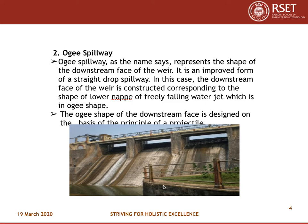Second is the ogee spillway. As the name suggests, it represents the shape of the downstream face of the weir. It is an improved form of a straight drop spillway. In this case, the downstream face of the weir is constructed corresponding to the shape of the lower nappe of a freely falling water jet, which is in ogee shape. Ogee shape means an elongated S-shape — when a capital S is stretched, you get this shape. The ogee shape of the downstream face is designed on the basis of the principle of a projectile. This is one of the most common types of spillways provided in dams.